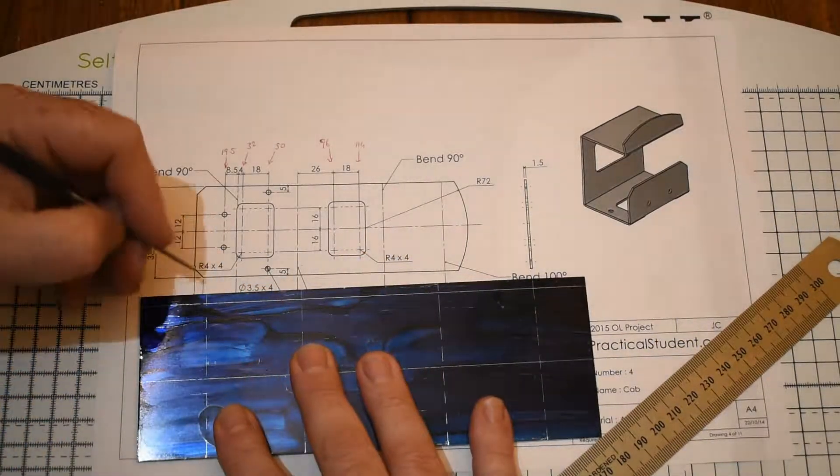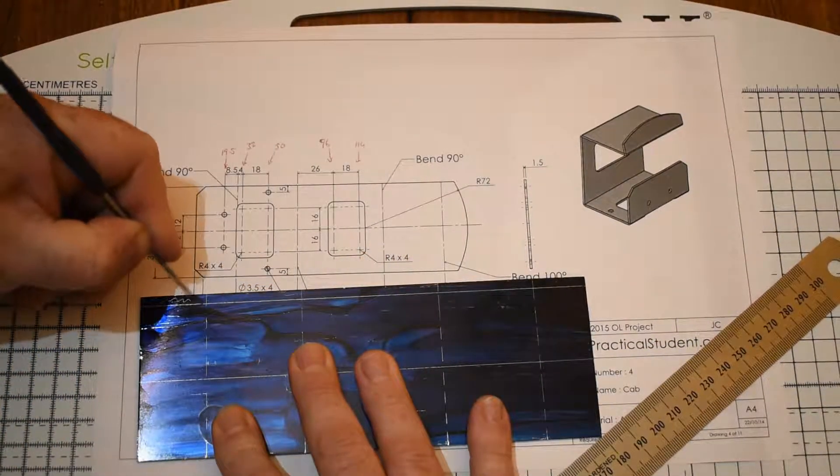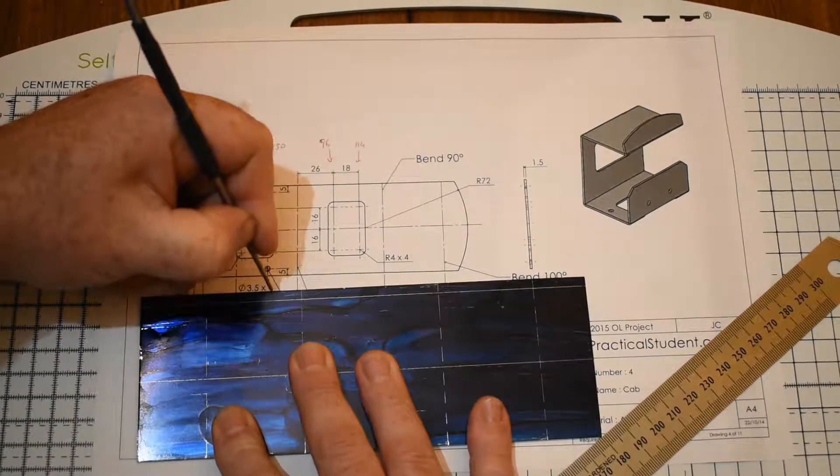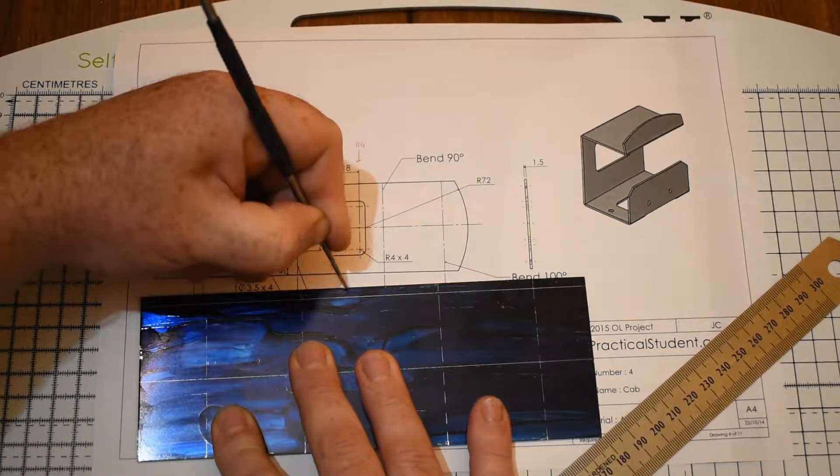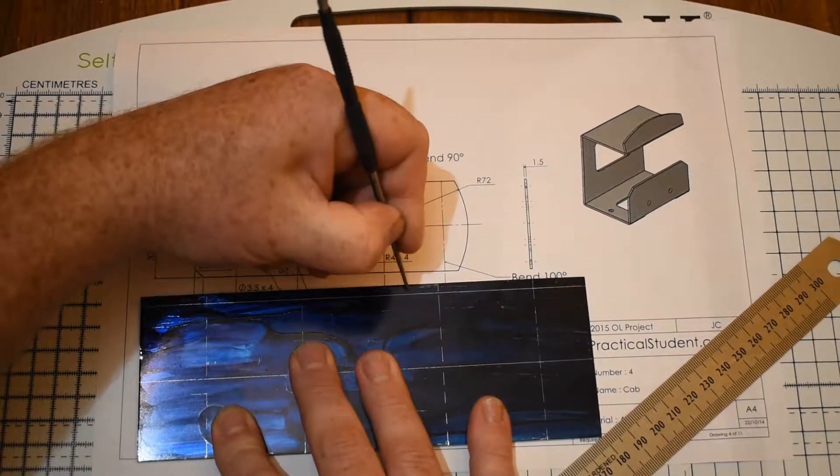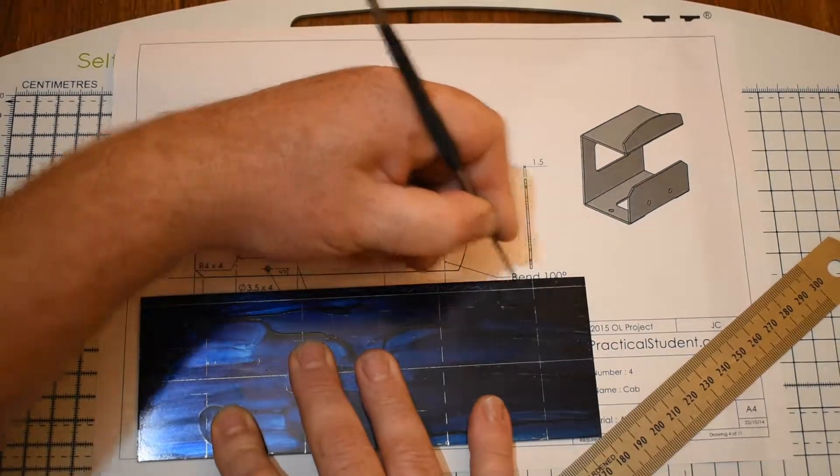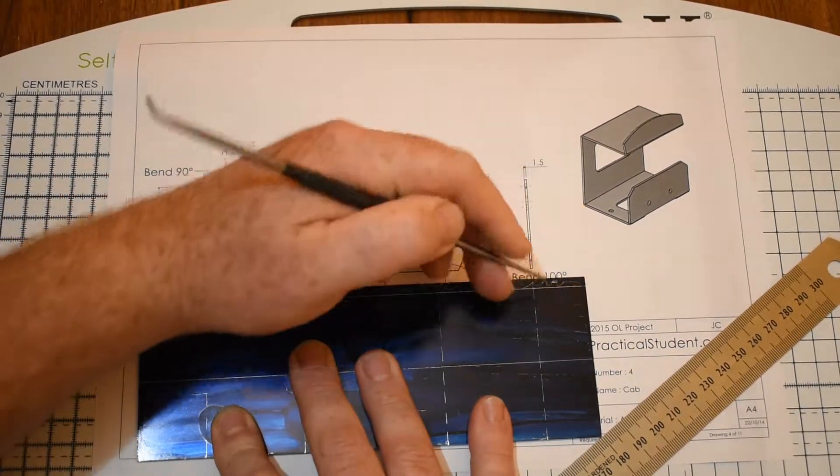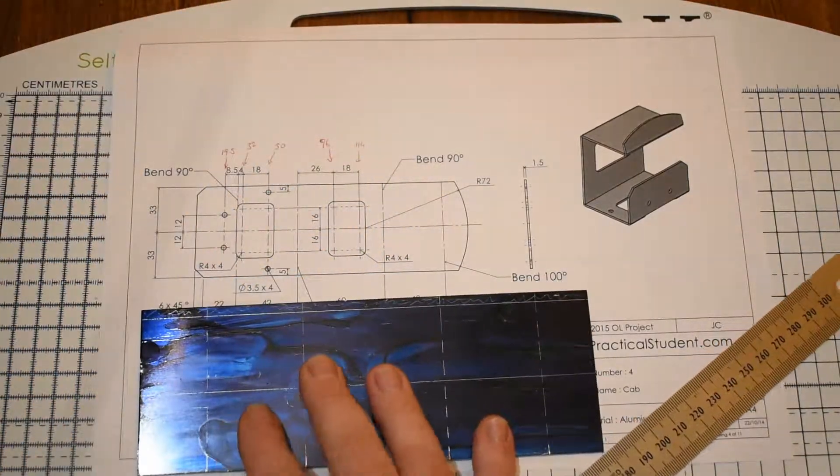Right, so everything above this line is waste all the way across. And we'll cut that off with the guillotine to save us having to do any filing later on. We don't know what's waste down at this end yet because we need to do a curve here, but we'll see that later on.